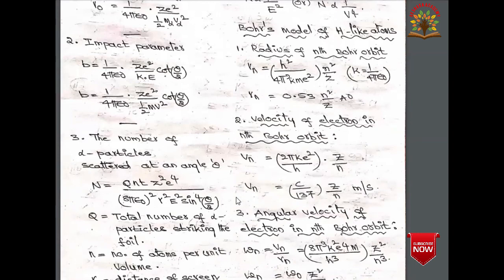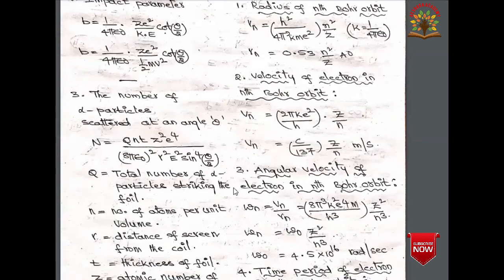The next most important concept is the Bohr model of hydrogen-like atoms. The radius of the nth Bohr orbit is given by R_n = h²/(4π²kme²) × n²/Z, and substituting values we get R_n = 0.53 × n²/Z angstroms, where 1 angstrom = 10⁻¹⁰ meters.